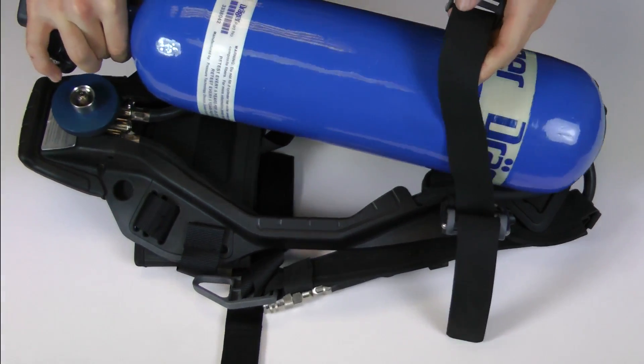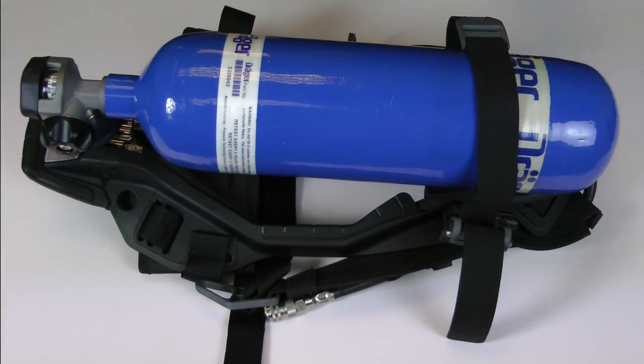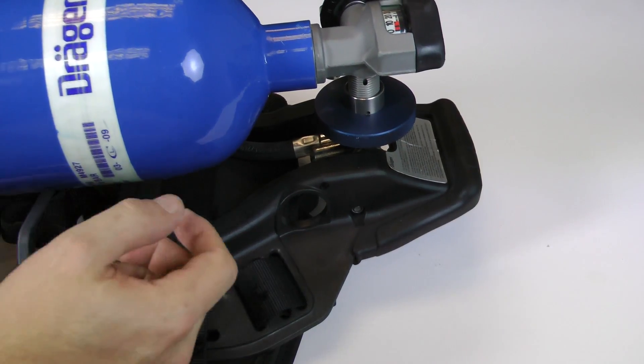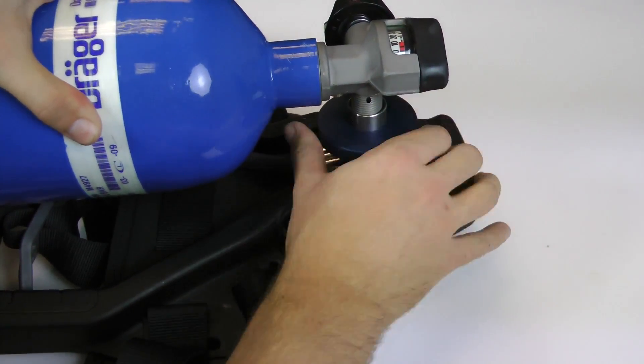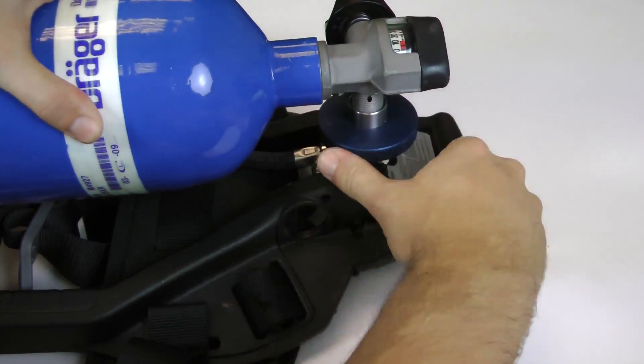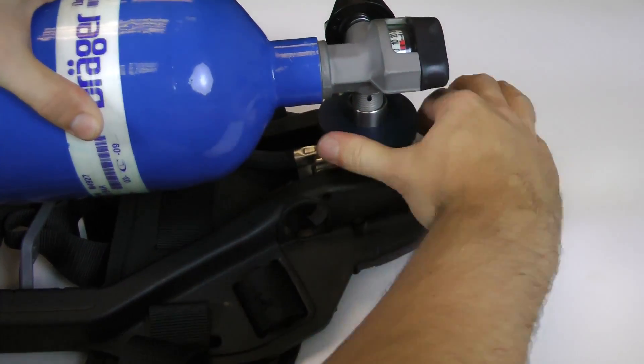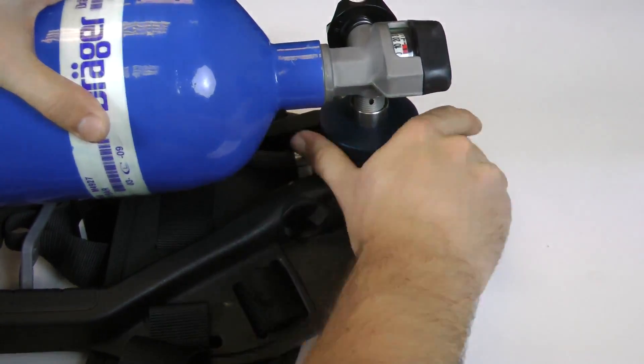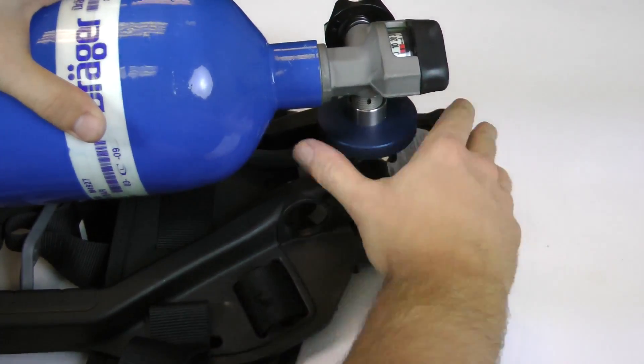Begin by inserting the cylinder through the cylinder strap and lining up the threads over the hand wheel. To attach the cylinder, turn the hand wheel counterclockwise. The hand wheel should be tightened all the way until the cylinder is firmly connected.